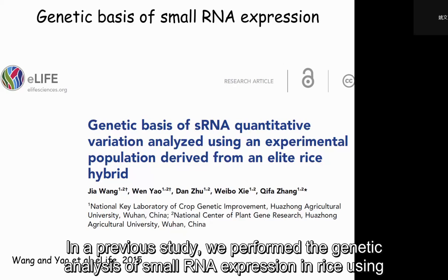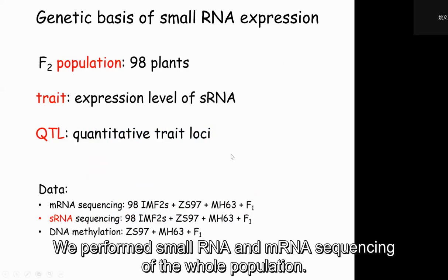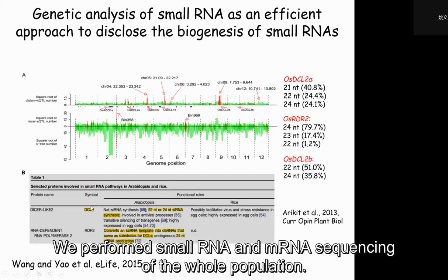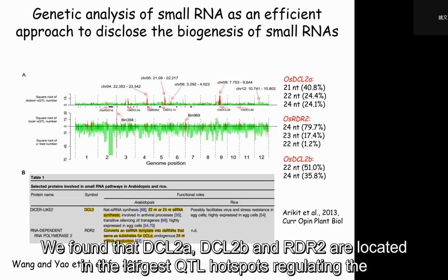In a previous study, we performed the genetic analysis of germline regression in rats using an F2 population. This is the basic information of this study. We performed the sRNA and mRNA sequencing of the whole population. We identified more than 1,700 loci regulating the expression of sRNA.